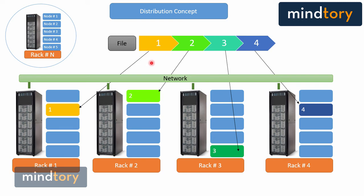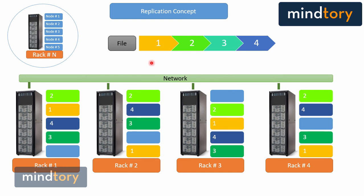This is different from a regular file management system, because a file management system deals with files within the same machine or cluster, while a distributed file system deals with file data blocks distributed across multiple nodes and across multiple racks. The second concept to discuss is replication. Replication means that each data block will be replicated many times on different clusters and different racks. On this example, data block number one is distributed and replicated on rack two, replicated also on rack three, and on rack four. The same happens for data blocks two, three, and four.